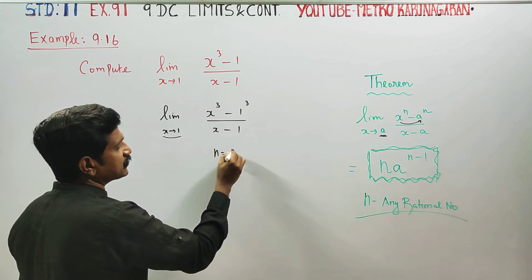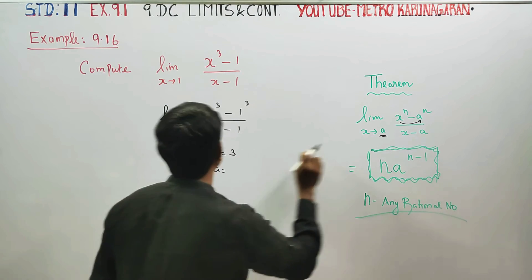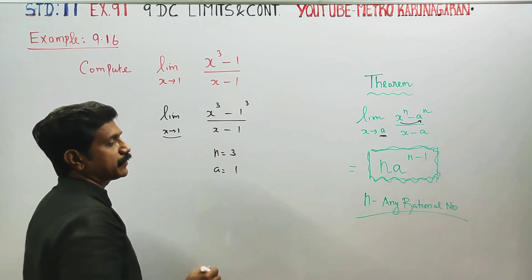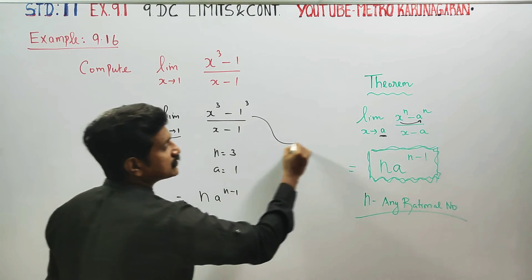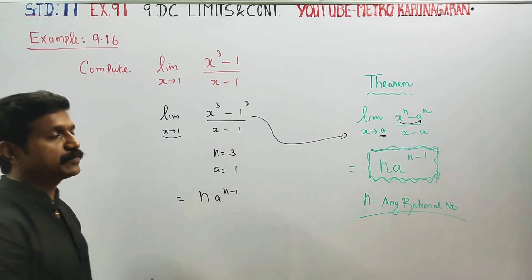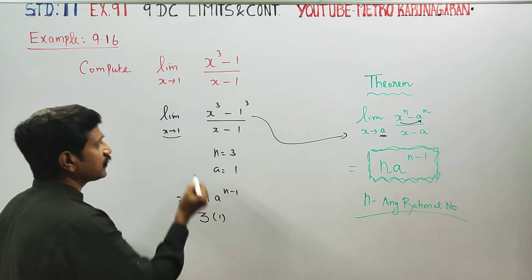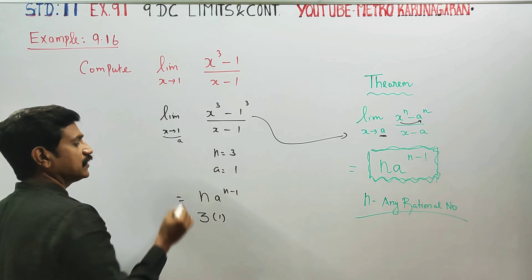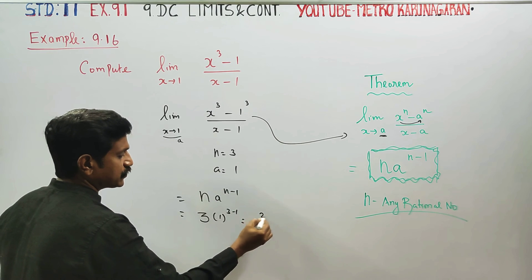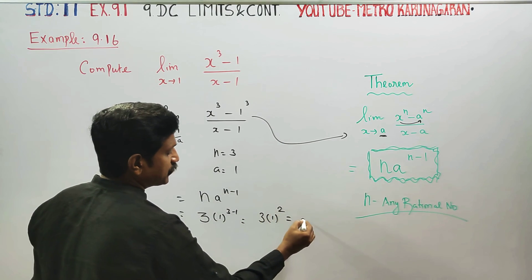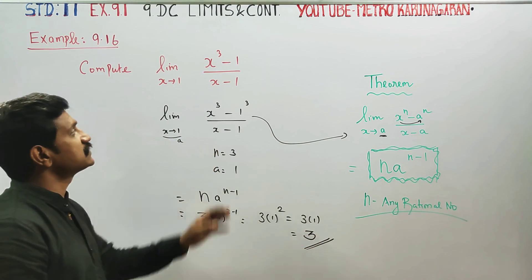Now the approaching value is a, and the approaching value here is 1. The formula is n into a power n minus 1. Matching the values: n is 3, a is 1. So the result is 3 into 1 power 3 minus 1, which is 3 into 1 squared, equals 3. Your final answer is 3.